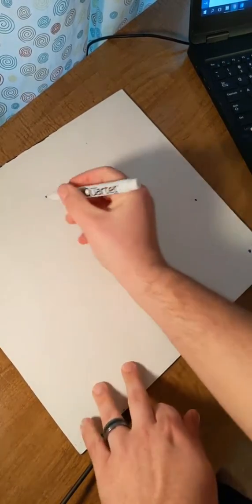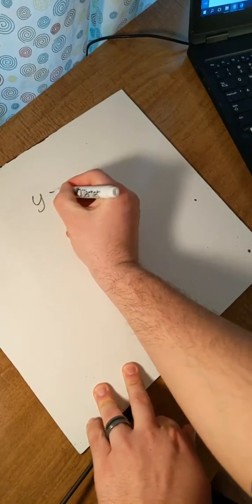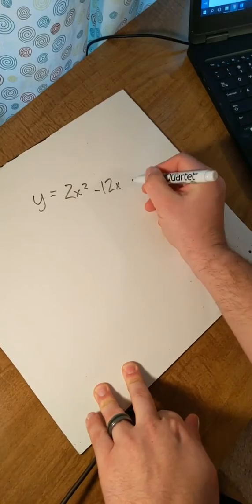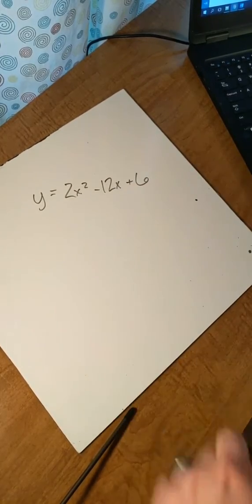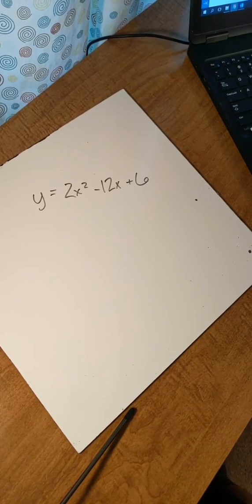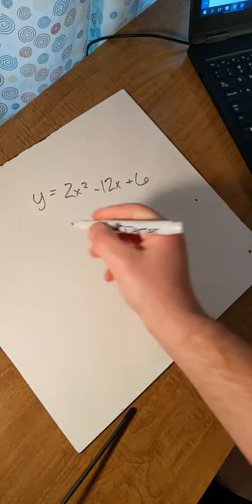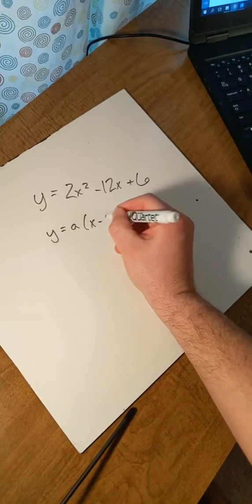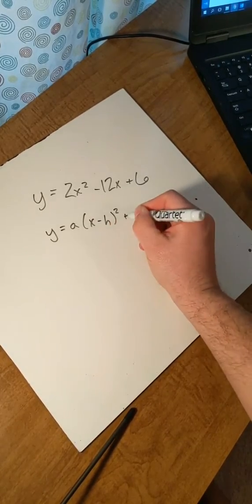So the first problem is, if we have an equation written y equals 2x squared minus 12x plus 6, how do we find out the information about that graph? Well, the first thing we want to do is put this into what's called standard form.